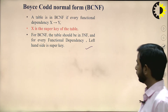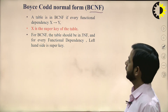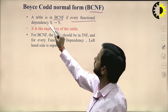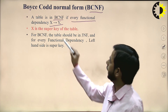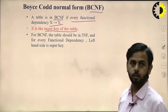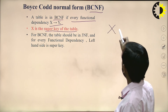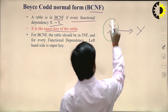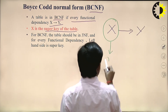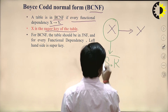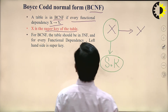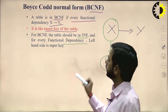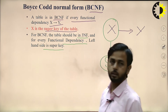Next, see BCNF or Boyce-Codd Normal Form. A table is in BCNF if for every functional dependency X → Y, X is a super key of the table. For BCNF, the table should be in 3NF and for every functional dependency, the left-hand side must be a super key.